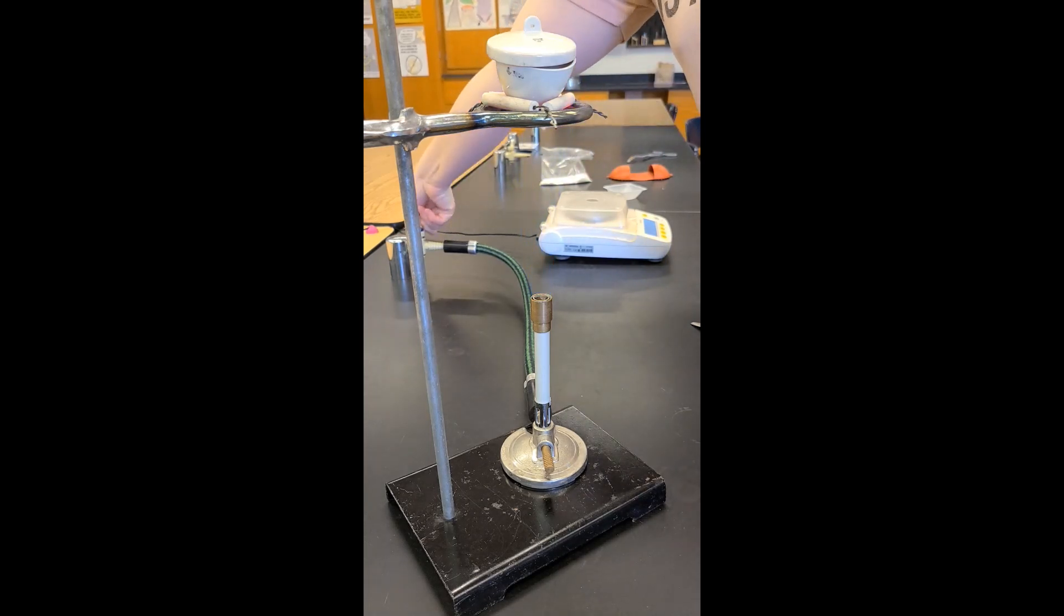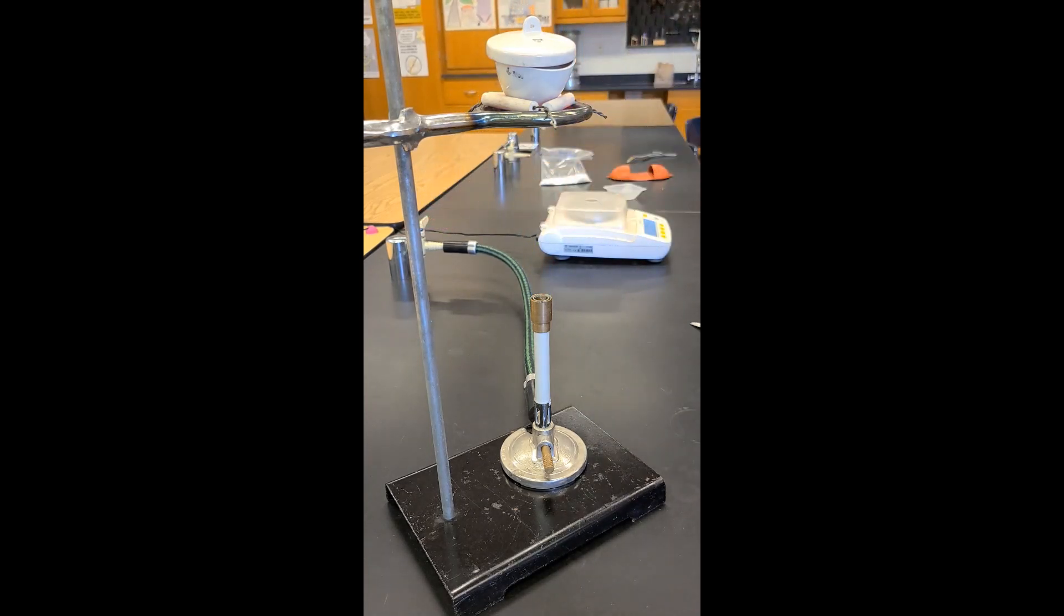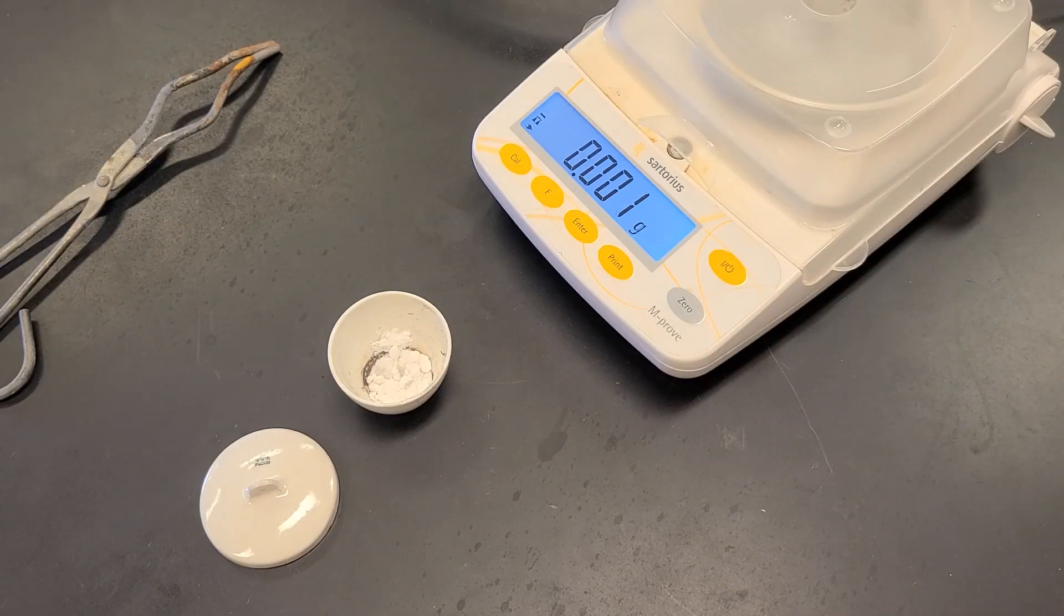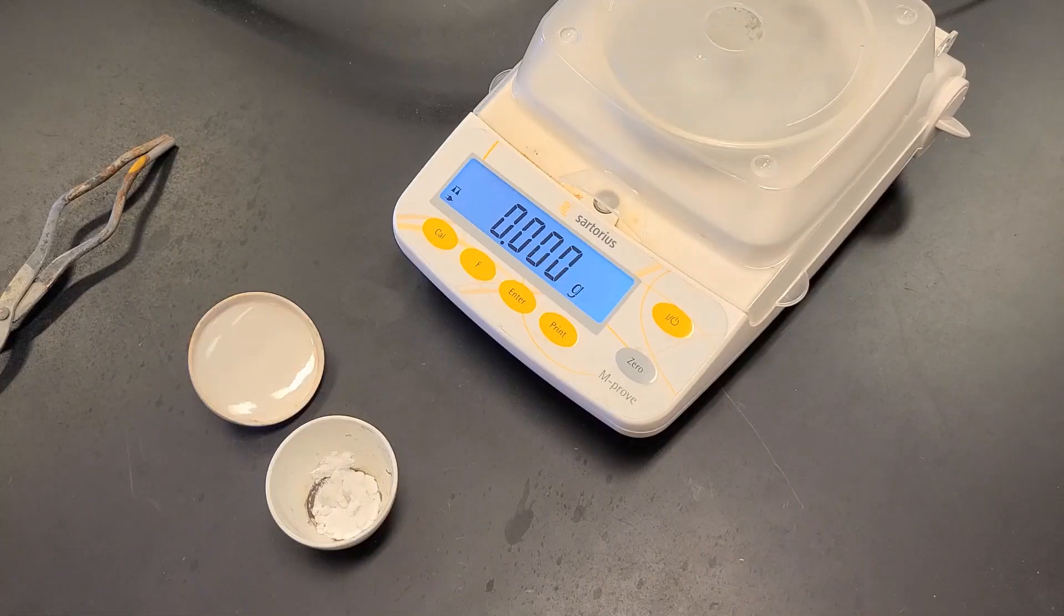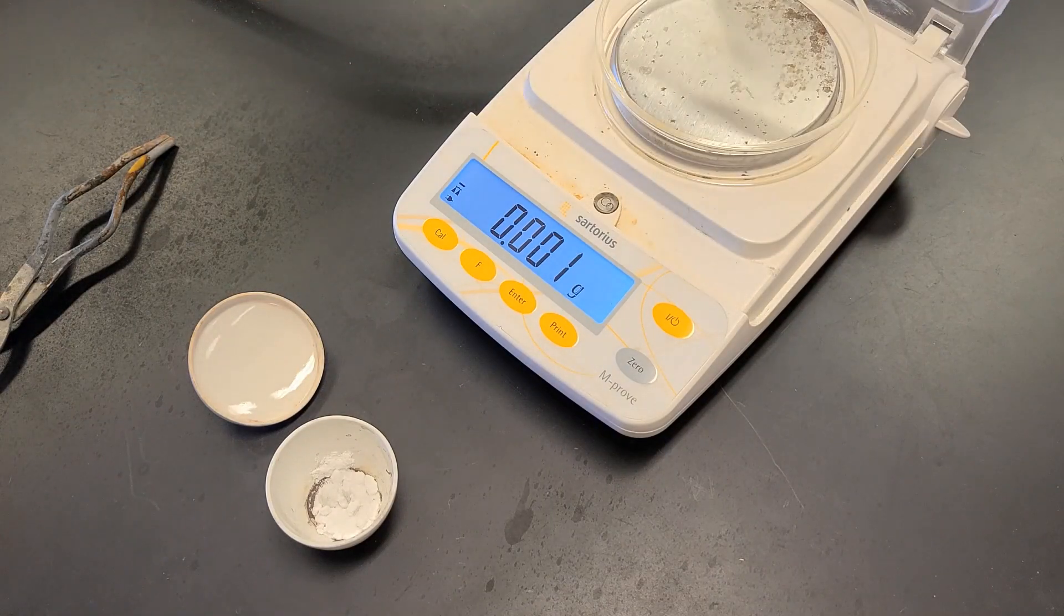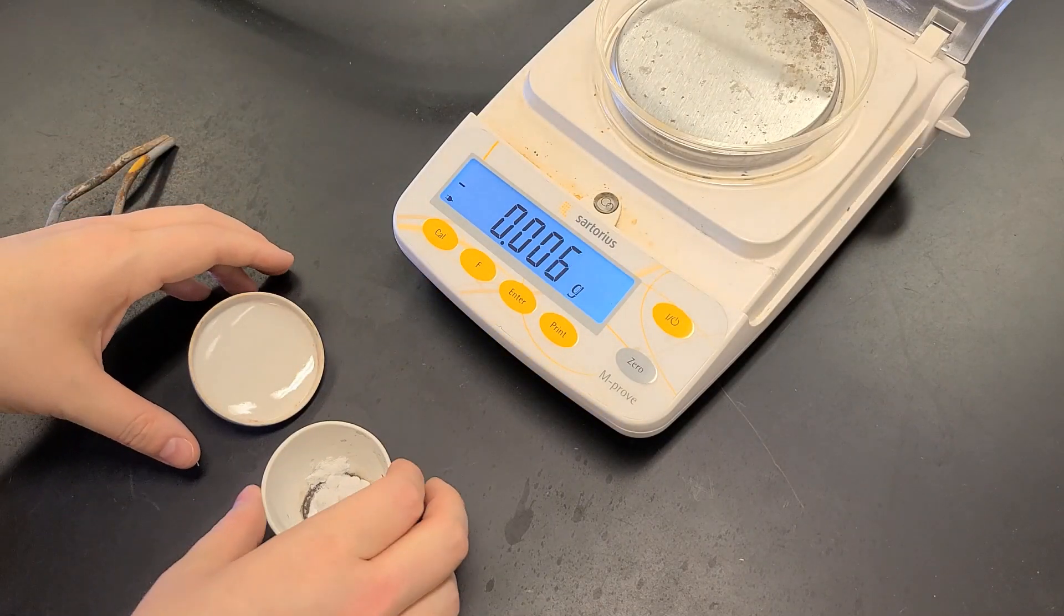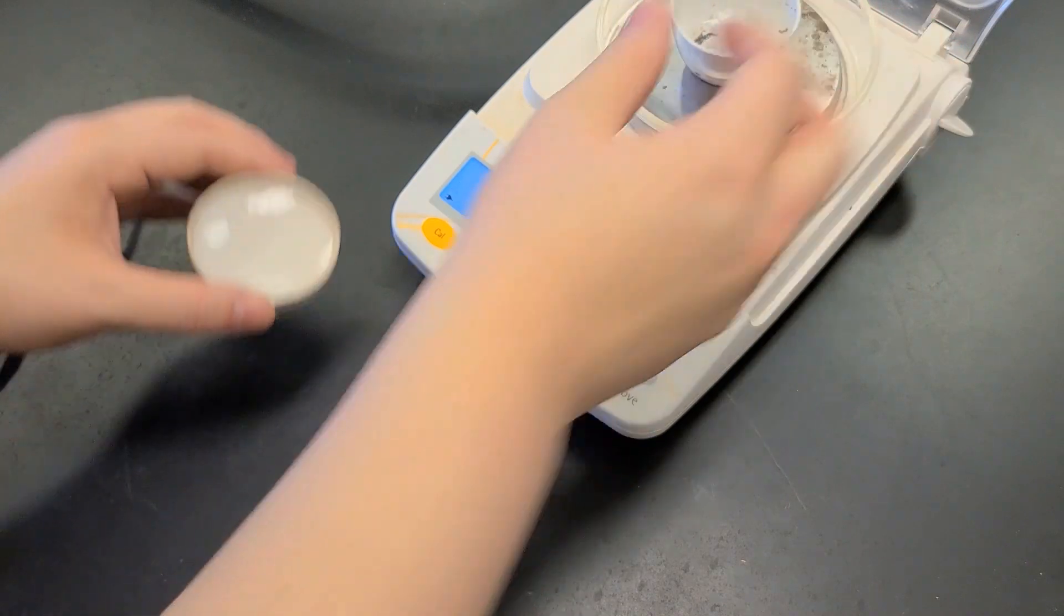The gas is turned off after several minutes of strong heating. The sample is allowed to cool completely before massed again. A hot crucible will weigh inaccurately.